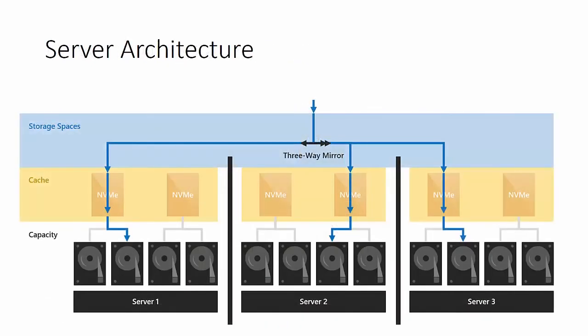For server architecture, a key feature is the three-way mirror, which provides automatic replication. Data is replicated to drives across different servers in the cluster, ensuring redundant data availability. This is very much like Azure — Azure has a concept of triple replication of data, and this brings that same type of technology to on-premises infrastructure.